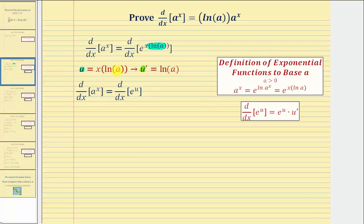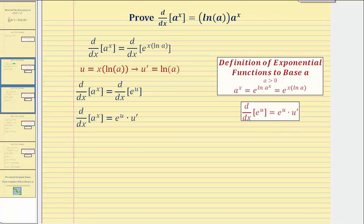So now we have the derivative of a to the x with respect to x is equal to the derivative of e to the u with respect to x. And we know this derivative is equal to e to the u times u prime, which we have here.